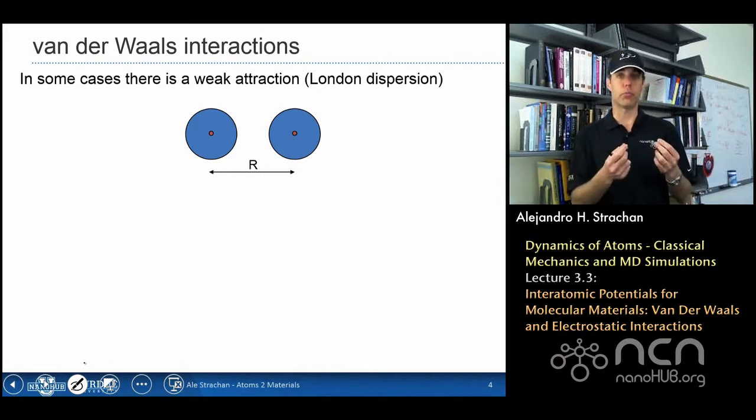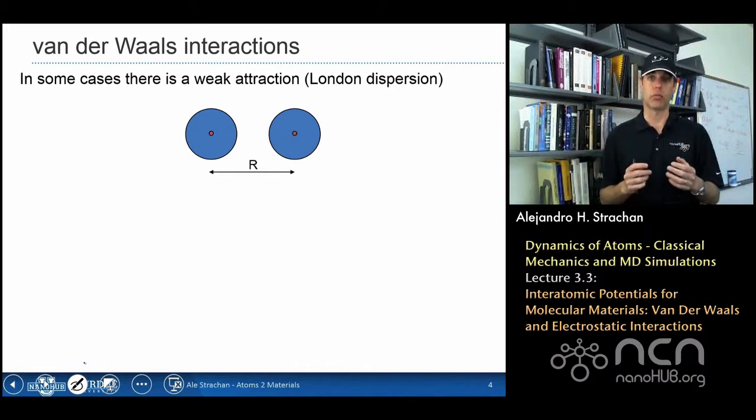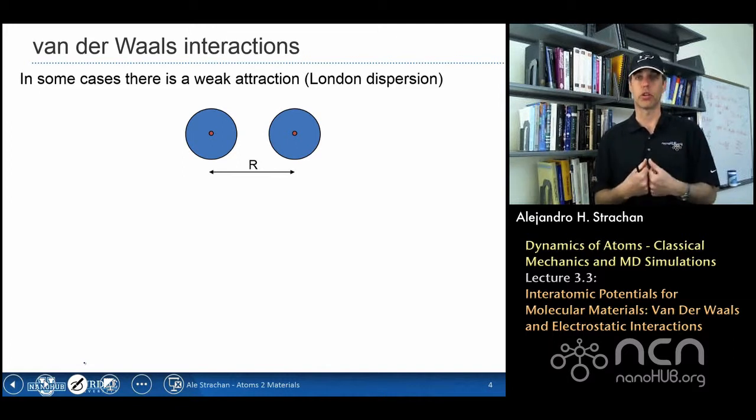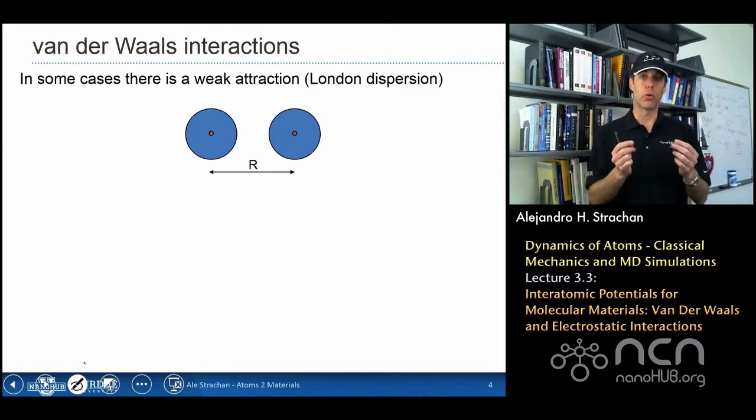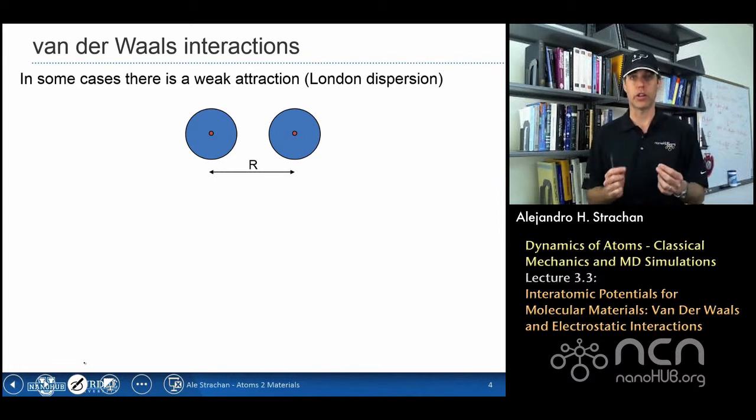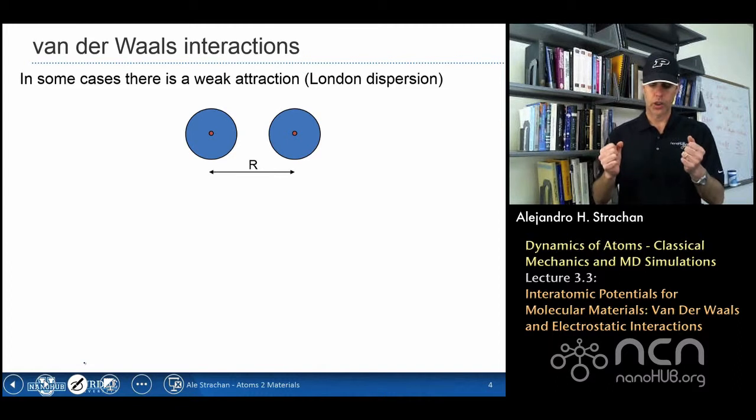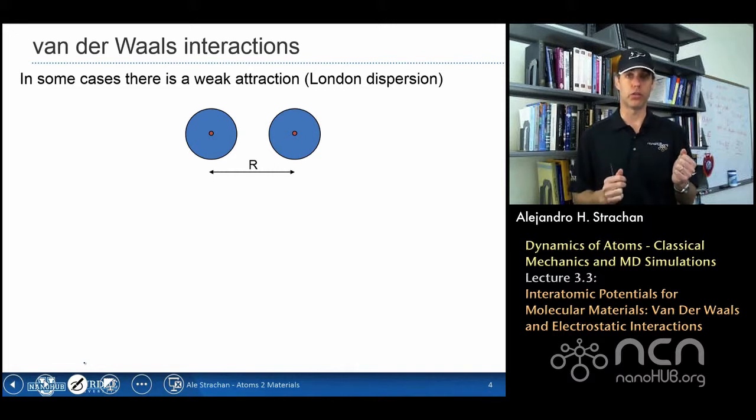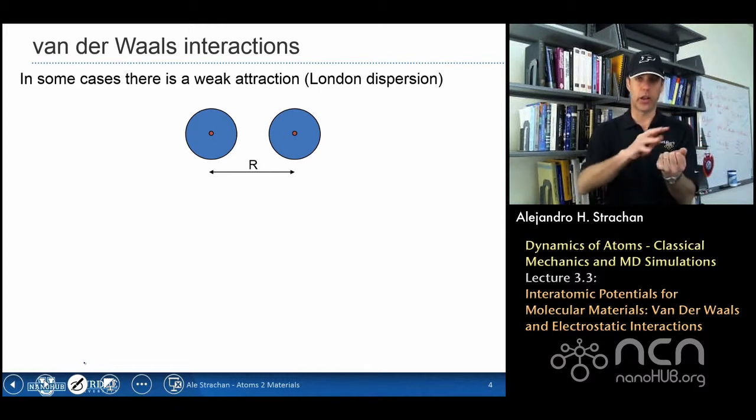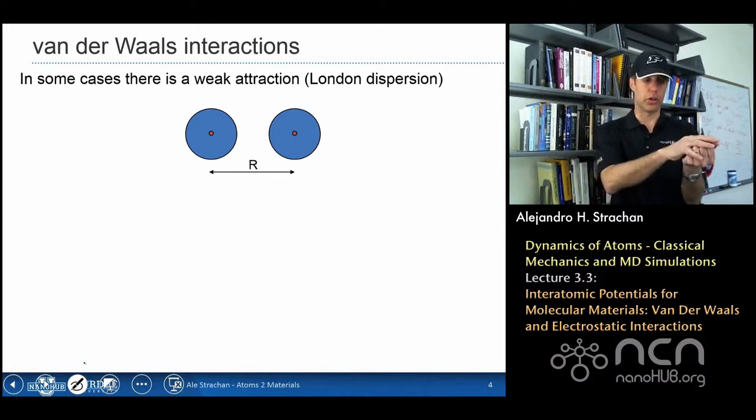Now we also know that in some cases of noble atoms there is a weak attraction, that's why they become liquids at very low temperatures. And we're going to talk about the origin of that weak attractive interaction that's called London dispersion. The origin of this is what's known as induced dipole-induced dipole interactions.